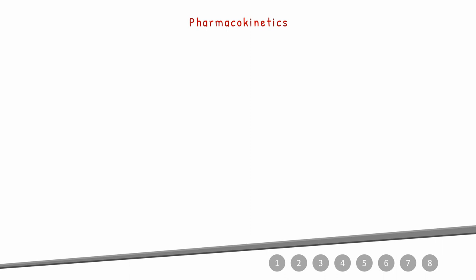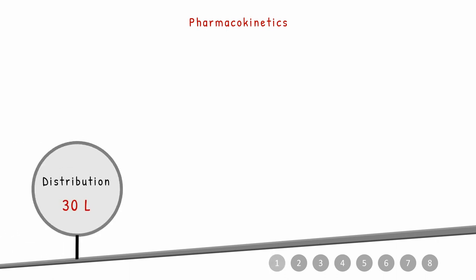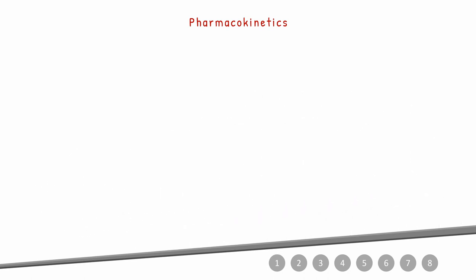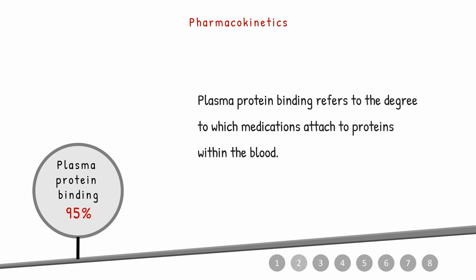Coming to the pharmacokinetic nature of Riociguat: distribution is defined as the hypothetical fluid volume through which the drug is dispersed — volume of distribution equals X divided by C, where X is the amount of drug administered and C is the concentration in blood plasma. The volume of distribution for Riociguat is 30 liters. Plasma protein binding — the degree to which the medication attaches to proteins in blood — is 95%.